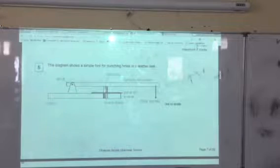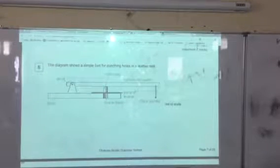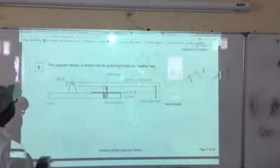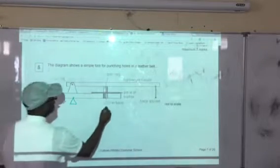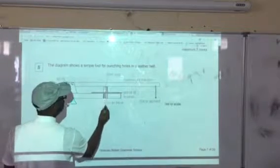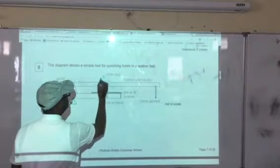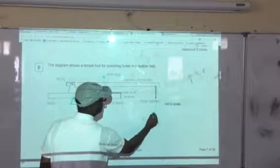This diagram shows a simple tool for punching holes in a leather belt. We use this every day but little do we know that this has something to do with physics. If you look at this, there is a pivot, a hole punch here, a steel peg with a force acting upwards, and the force applied is acting downwards.